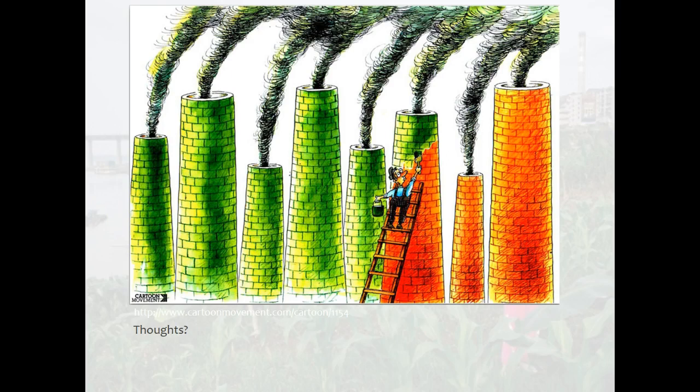So a few of my thoughts. First of all, it's important to point out that this cartoon is indicating that the person is painting the red smokestacks green — not taking green smokestacks and painting them red, but red painting them green. This is something that's often referred to as greenwashing, which we will cover in more detail this semester. Greenwashing is basically taking something that's not sustainable and making it appear to be more sustainable, whether through advertising or messaging or whatever.